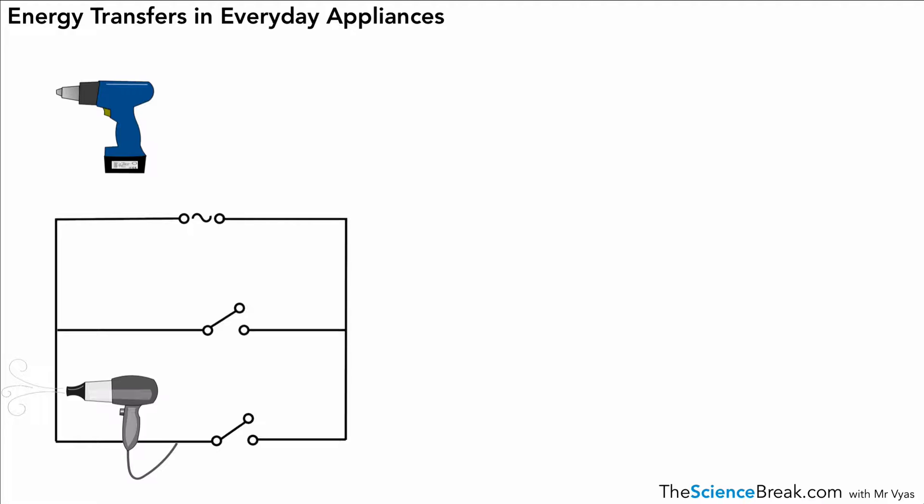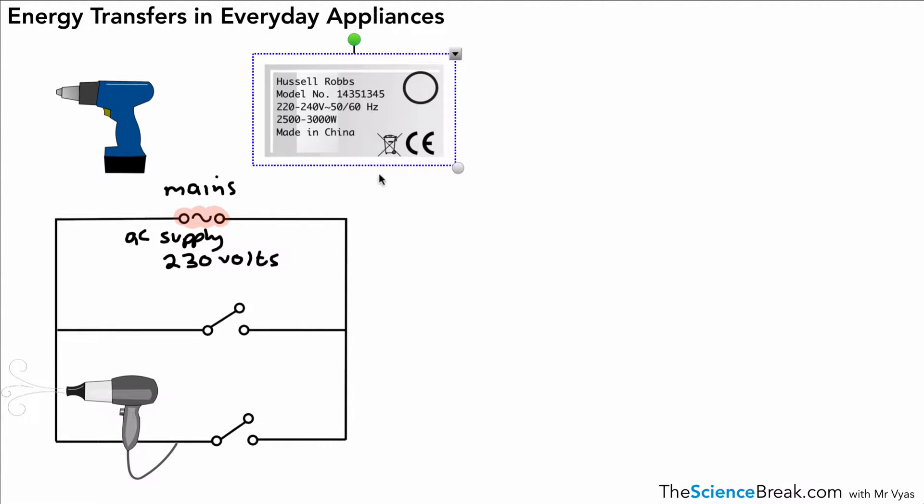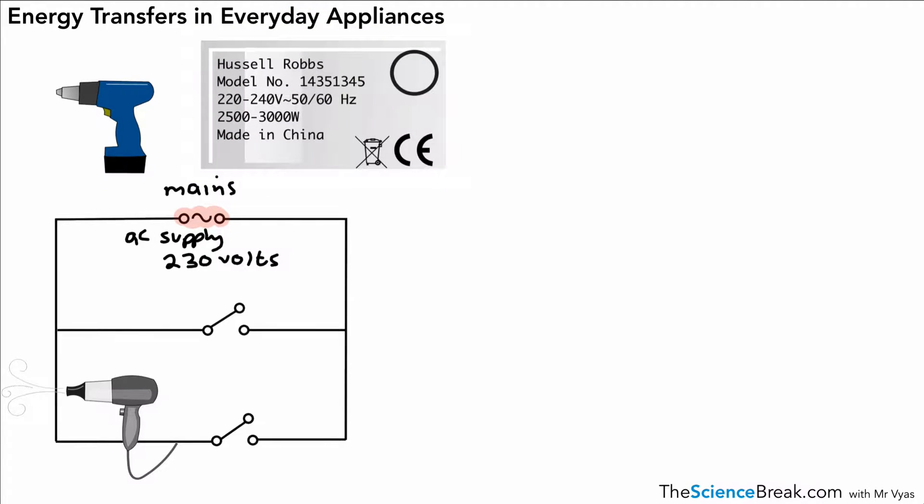Okay, now let's have a look at an example. Here we have a couple of appliances. They are running off what we call mains electricity, and mains you might write or show the symbol like that. Mains is an AC supply. A little wiggly line shows an AC supply. And for the UK, the main supply is about 230 volts. The potential difference for the main supply is about 230 volts. Every appliance you have in your home will have a little badge on it, and that badge will have what's called the power rating, amongst other bits of information. So here's the power rating. It says 2,500 to 3,000 watts. So that's the range of powers used by that electric drill.